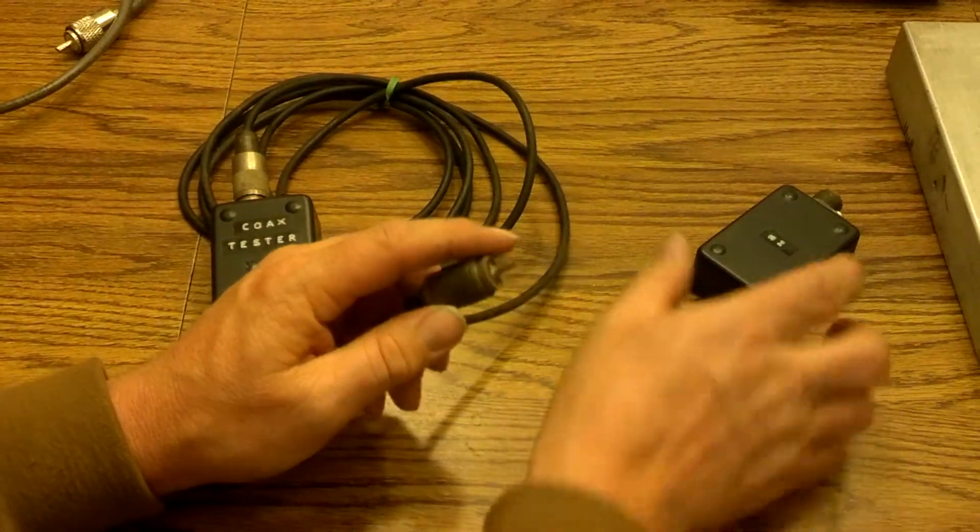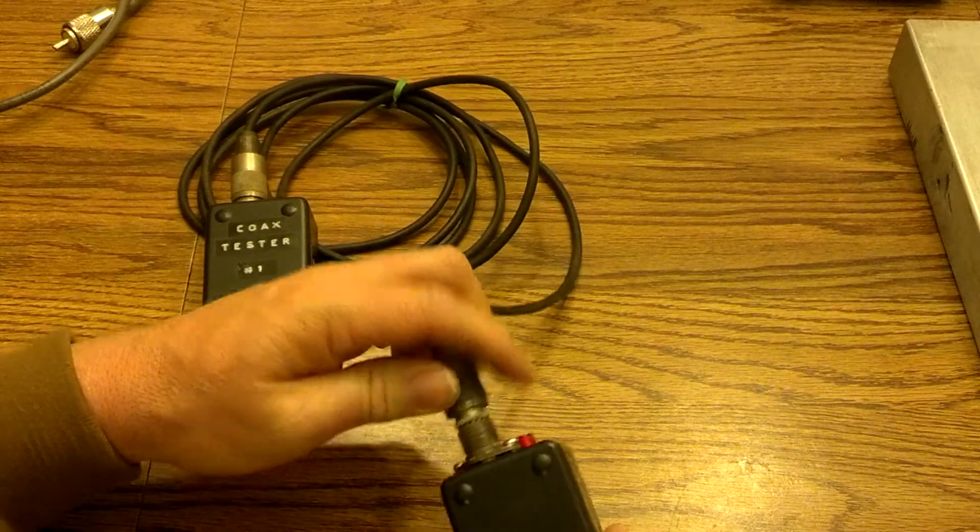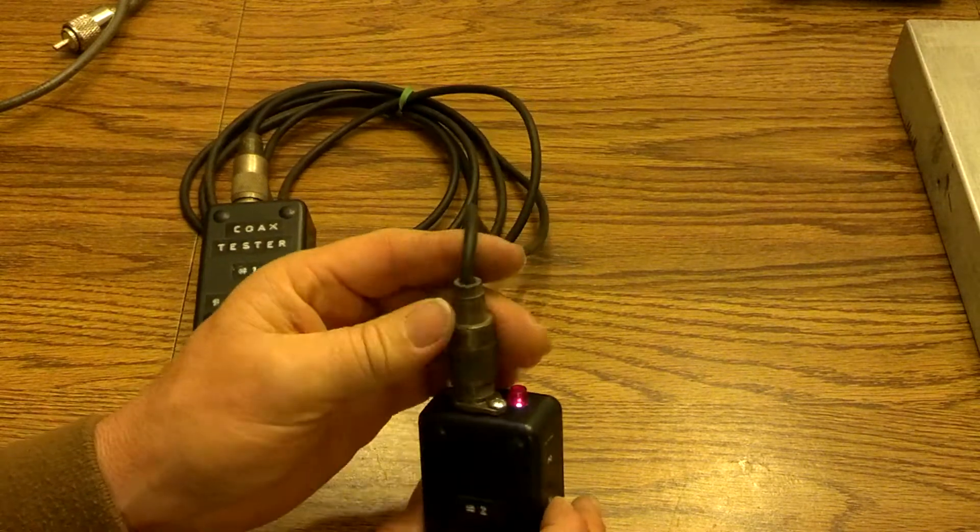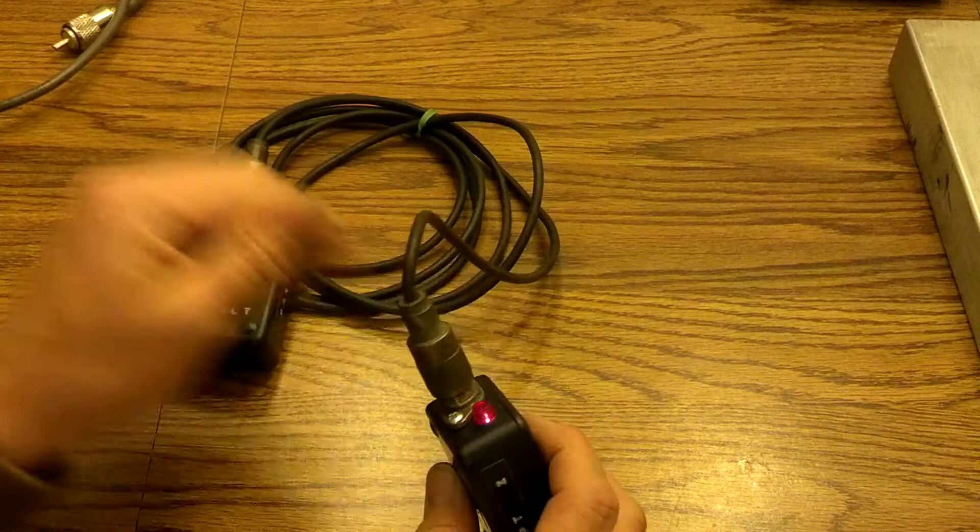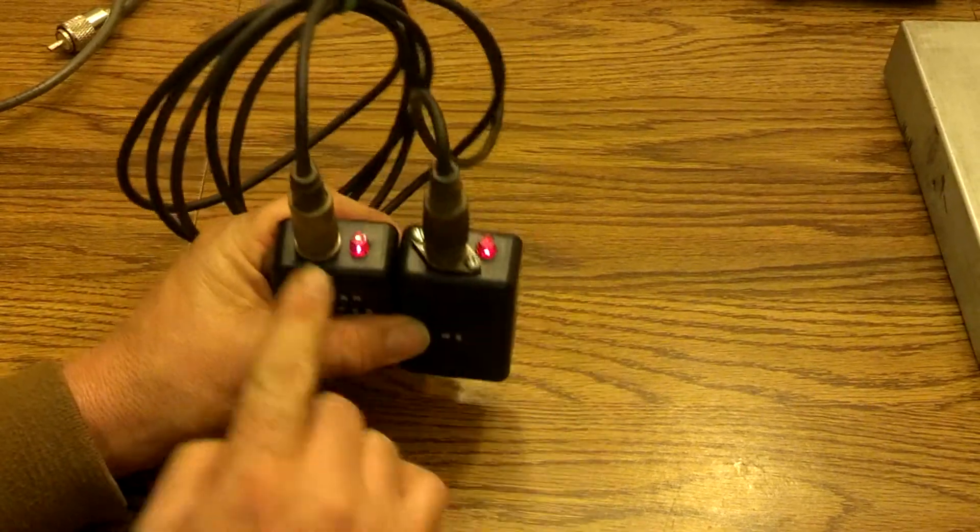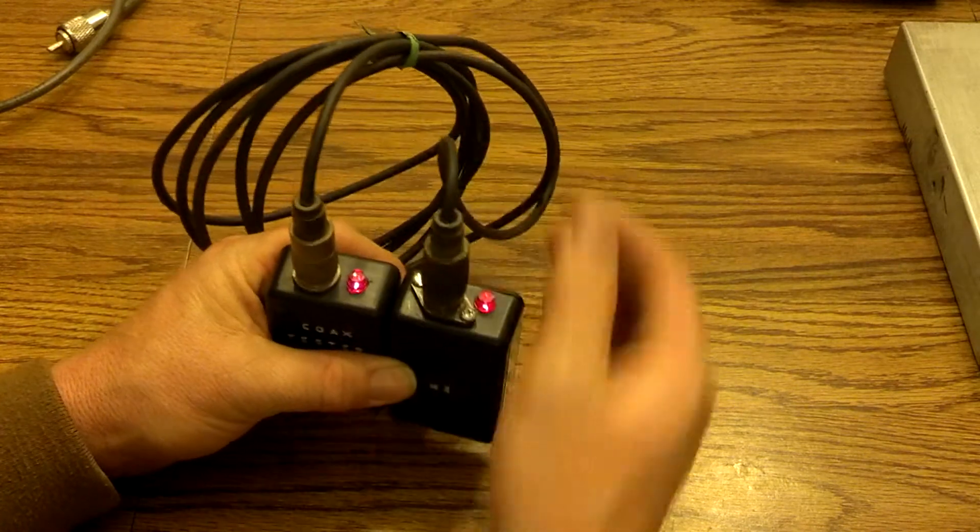But what I want to do is check this to where it shows a continuous loop and it will show you both lights will light up. It's good. And that's what you have. Good circuit continuity.